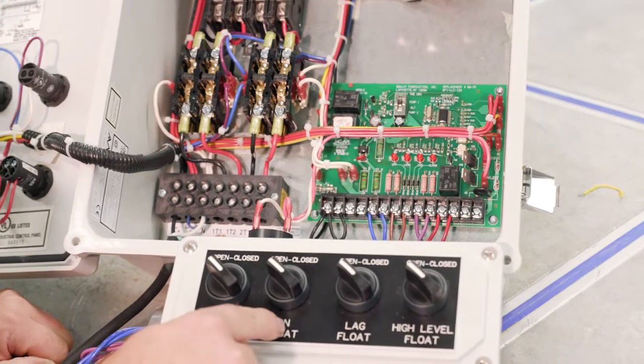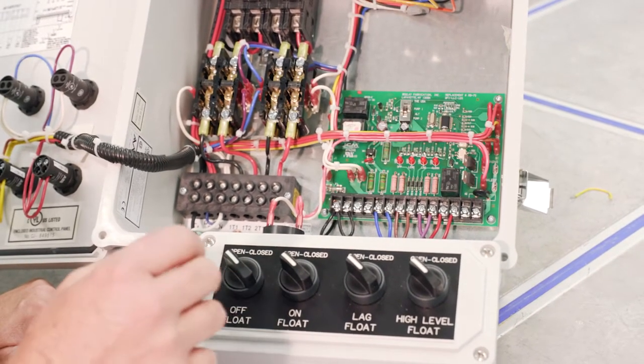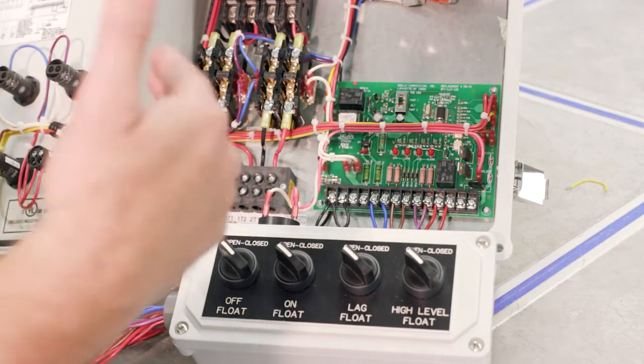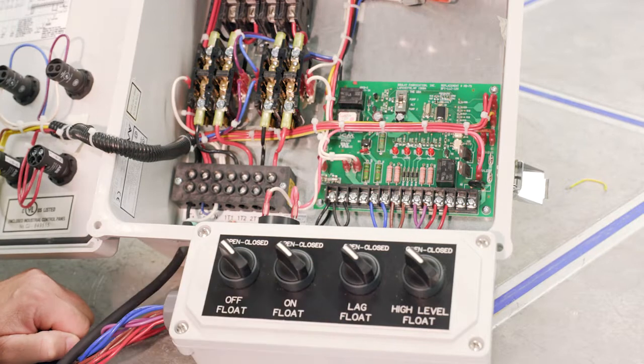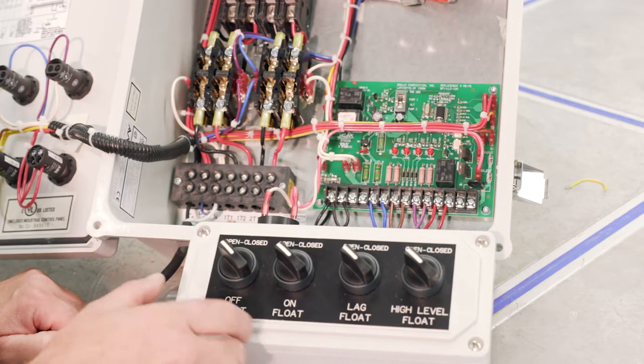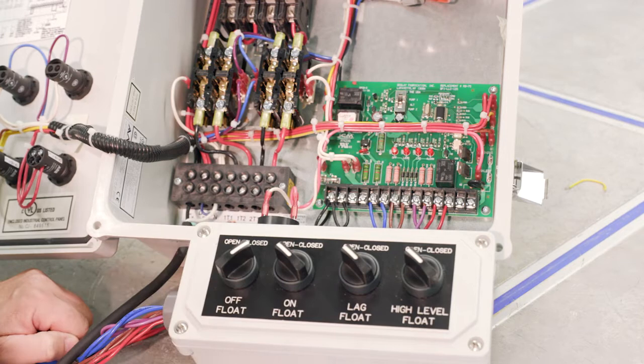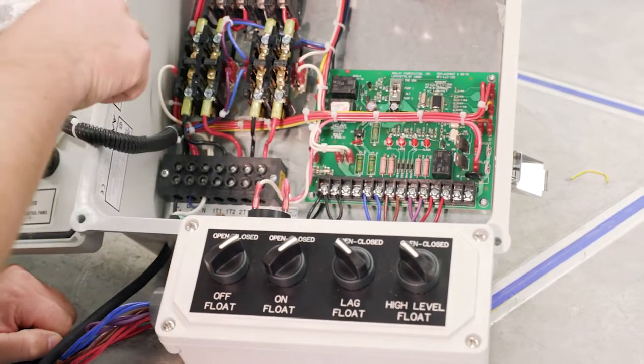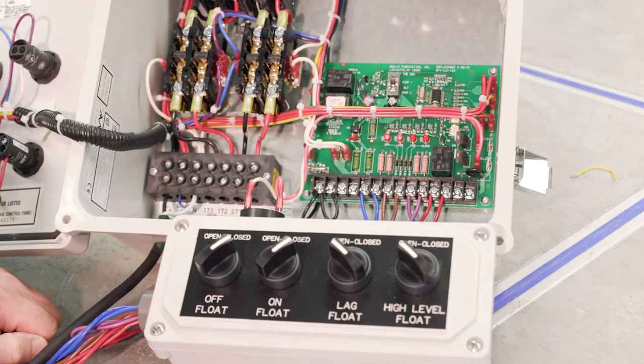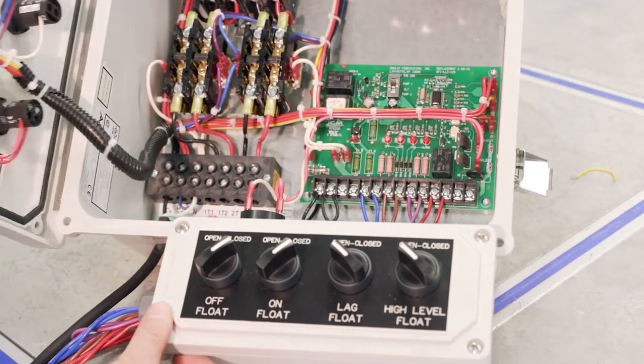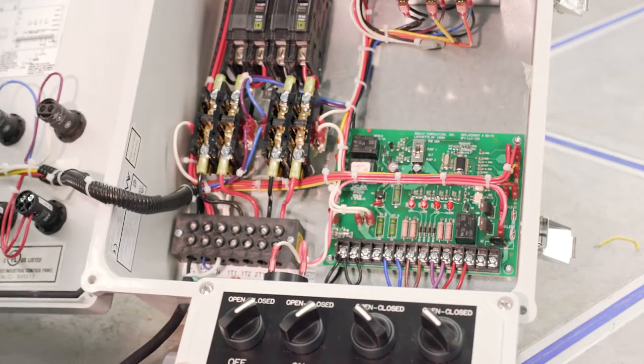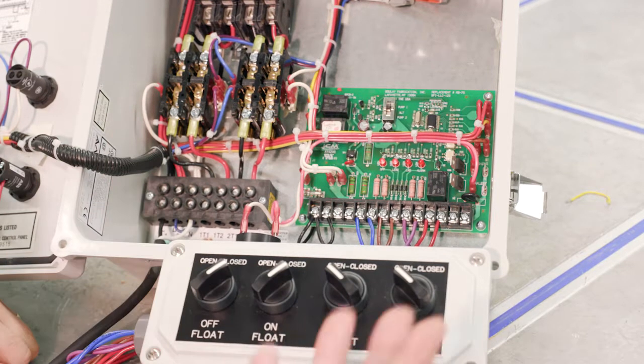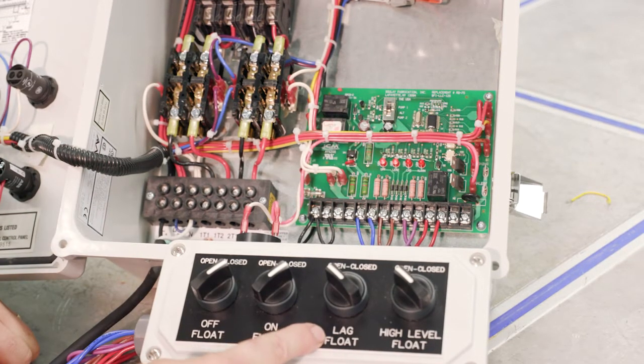So the next scenario is, let's say that the on float does not keep up with the demand. Water level is still rising, it gets to the lag float. So we'll go through that scenario. Off float, just the light, nothing else. It's on float, the light alternates now. So just to see which one is on, pump two is on. But again, let's say that doesn't keep up. Water level is rising, it gets to the lag float.